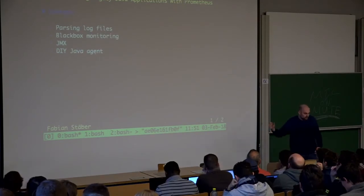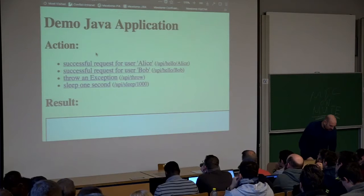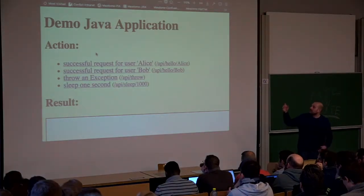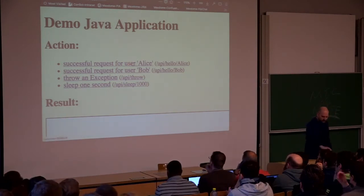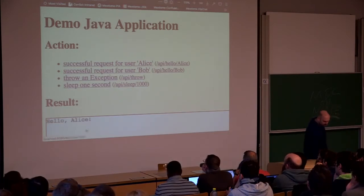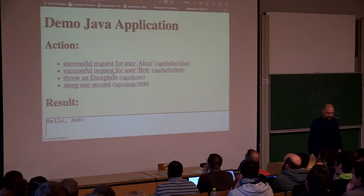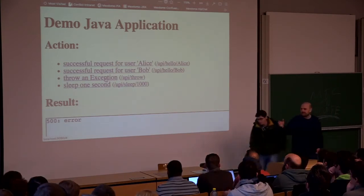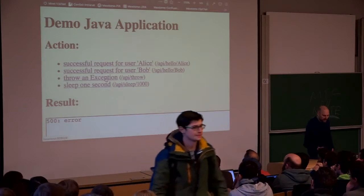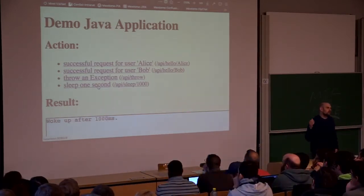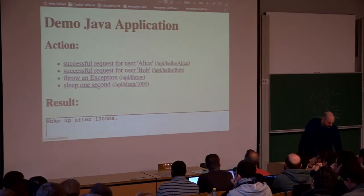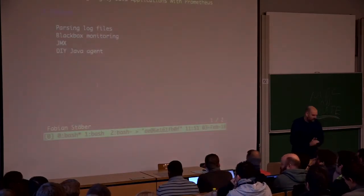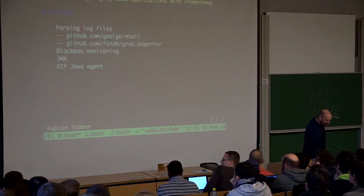As an example application I implemented this little Spring Boot application with some REST interfaces. If I click here it hits the /hello/Alice endpoint and shows the result. I can also say hello to Bob. I have a small endpoint that throws an exception resulting in an HTTP 500 internal server error, and one that sleeps a second before responding. We're going to monitor this application with different tools.